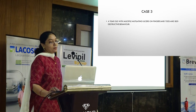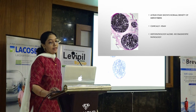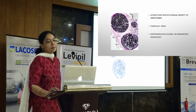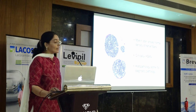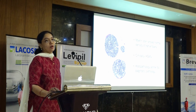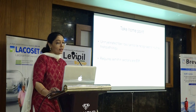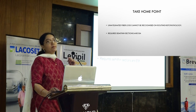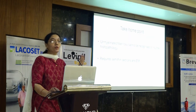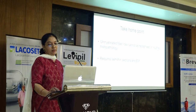Four-year-old with multiple mutilating ulcers on fingers and toes and self-destructive behavior. Myelin stain showed normal density of fibers. Histopathology would be no diagnostic pathology. But clinically, it is HSA — hereditary sensory autonomic neuropathy. Can this happen? Yes, because HSA mainly has unmyelinated fiber loss. We were looking at myelinated fiber loss, and unmyelinated fiber loss cannot be recognized on routine histopathology. It requires methylene blue and EM. That is where we actually tell no diagnostic pathology and you may be saying there is pathology.